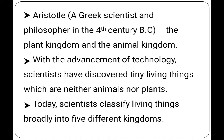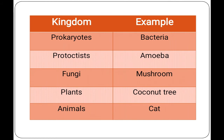But with the advancement of technology, scientists have discovered tiny living things which are neither animals nor plants. Today scientists classify living things broadly into five different kingdoms. Kingdom Prokaryotes includes all unicellular living things that do not have a true nucleus. Kingdom Fungi includes all multicellular living things that have characteristics of both animals and plants. Kingdom Plantae includes all multicellular chlorophyllous living things, and Kingdom Animalia includes all multicellular non-chlorophyllous living things.